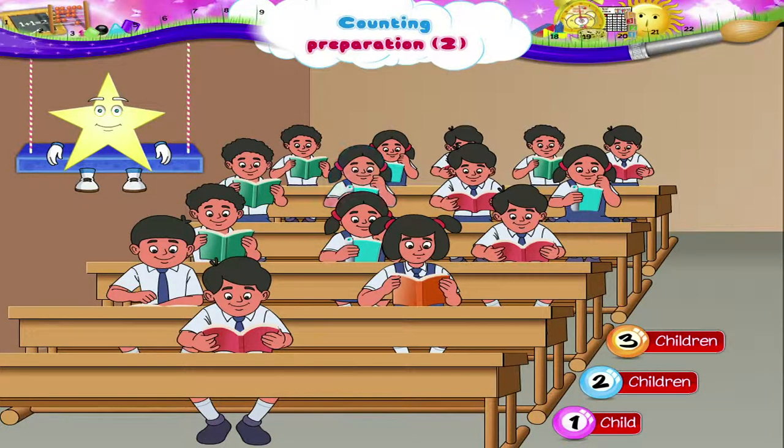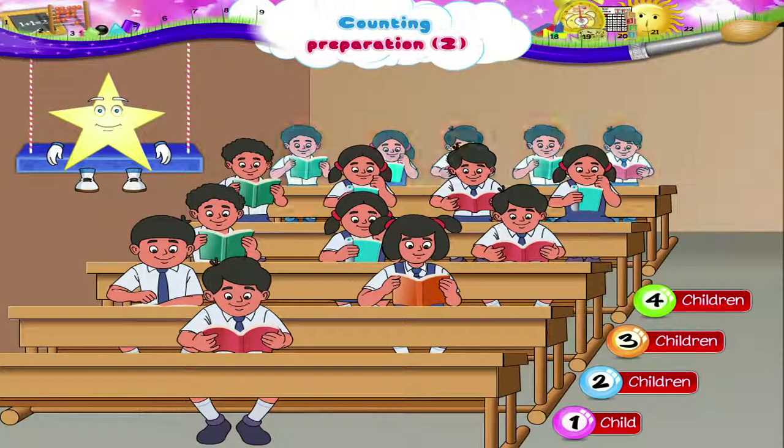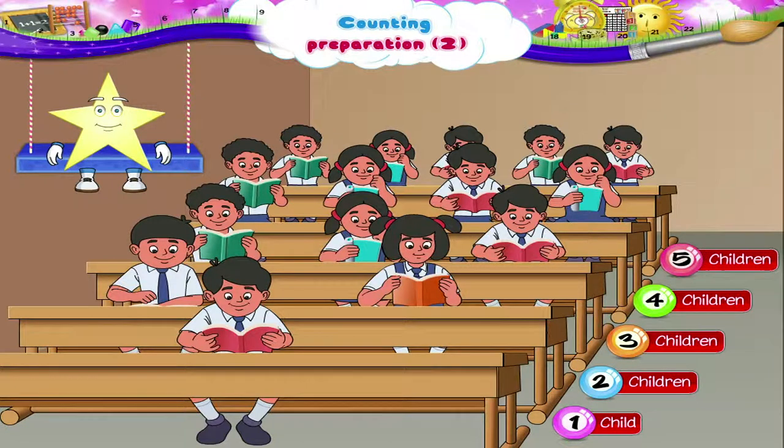1, 2, 3, 4, these are 4 children. 1, 2, 3, 4, 5, these are 5 children. That was good, Starry.